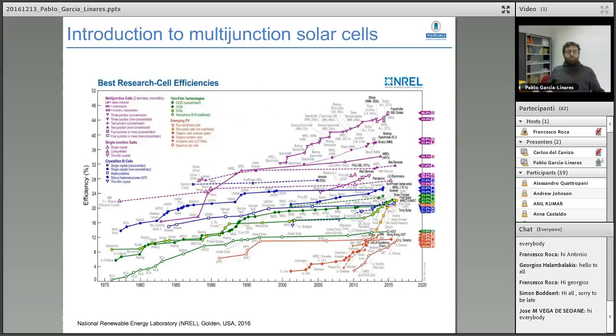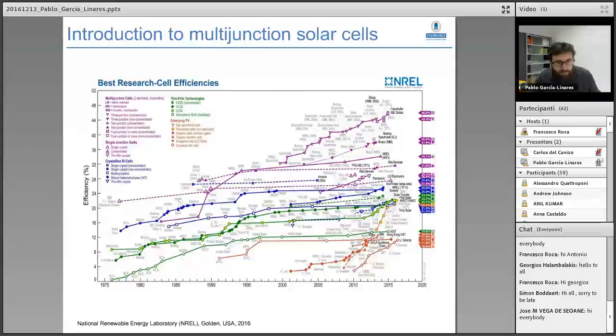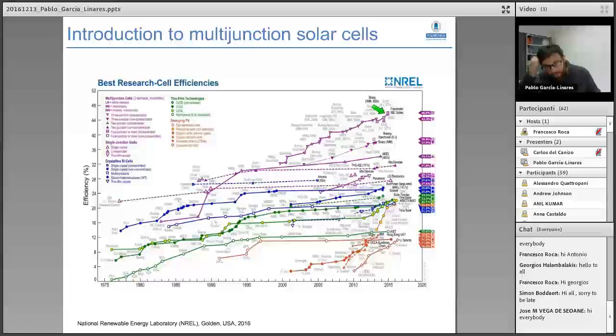Regarding multijunction solar cells, we have this very popular efficiency chart in which all the photovoltaic technologies are shown as a function of their efficiency and the year when they were achieved. Most PV technologies located in the higher efficiency range have a multijunction configuration.